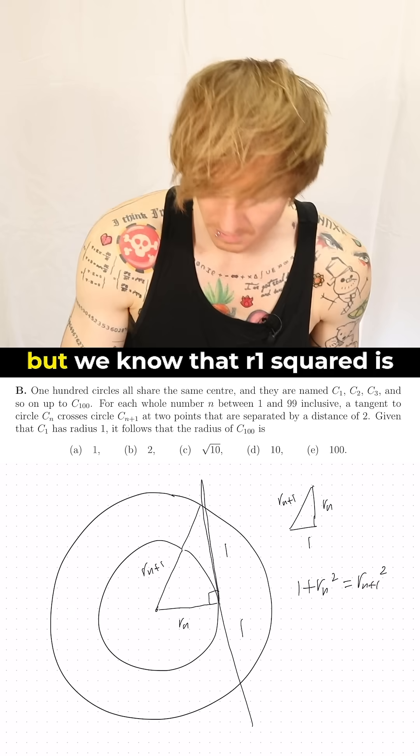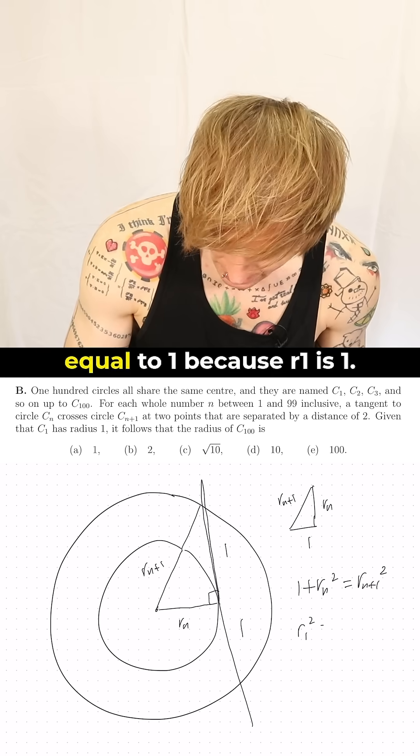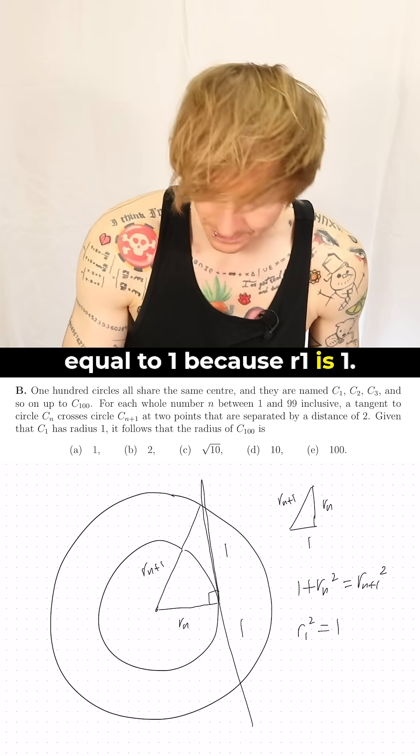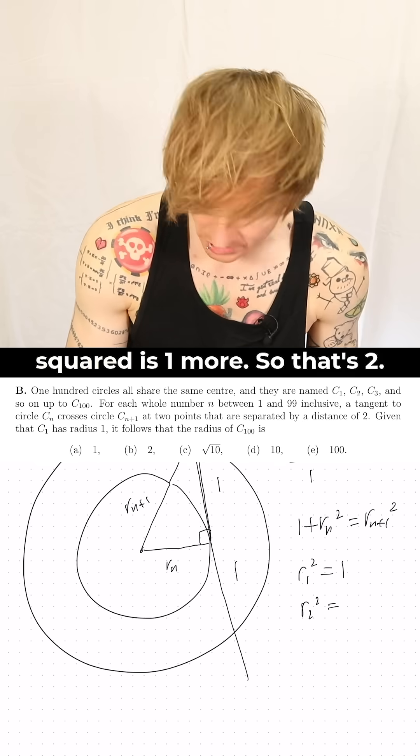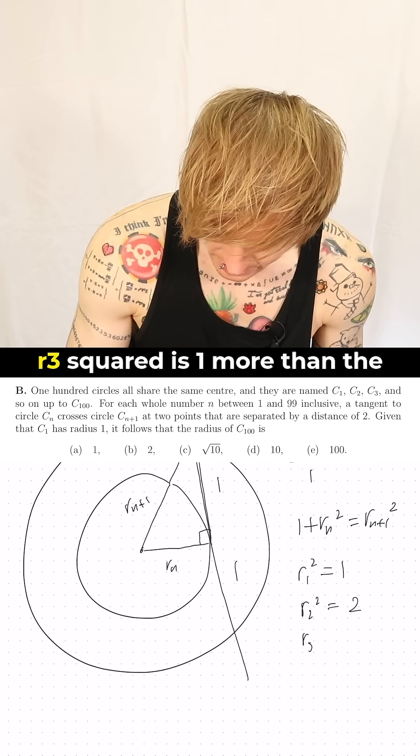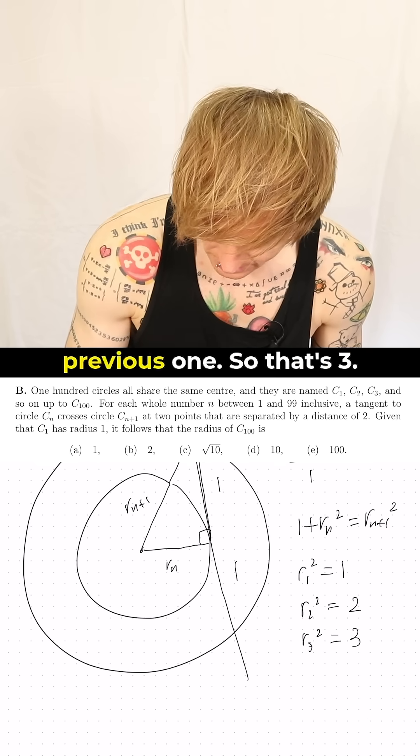This is true for all n, but we know that R1² = 1 because R1 = 1. So that tells us that R2² is one more, so that's two. R3² is one more than the previous one, so that's three.